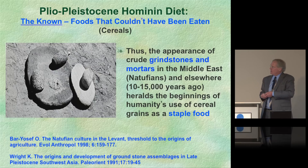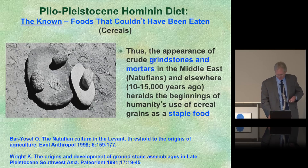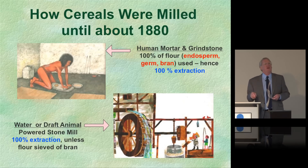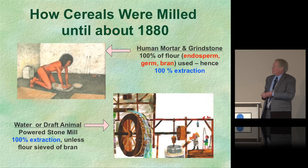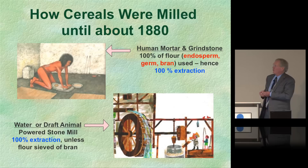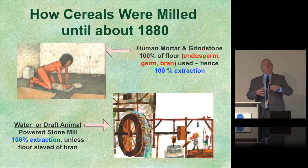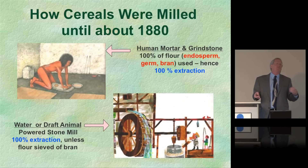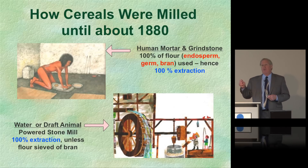We first see grains in the fossil record with crude grinding stones from the Natufian culture in the Middle East, roughly 10 to 15,000 years ago. Up until about 1880, we ground cereal grains with stone grinding tools and later water-wheel-powered millstones. This produced 100% extraction flour, with the germ, bran, and endosperm all mixed together — which is perhaps not as unhealthy as white flour.